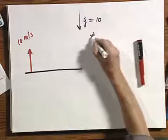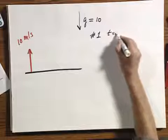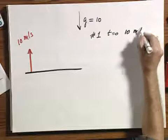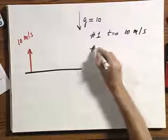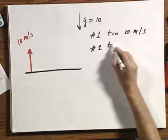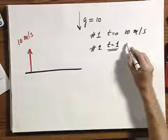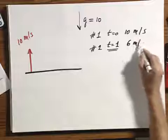So I throw up number one, object number one, at t equals zero, at 10 meters per second. And then I throw up another object number two, when t equals one second, so I throw it up one second later, and I do that at six meters per second.